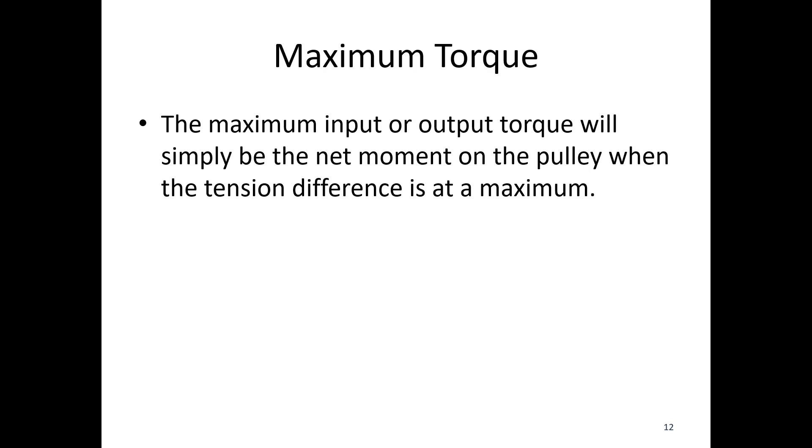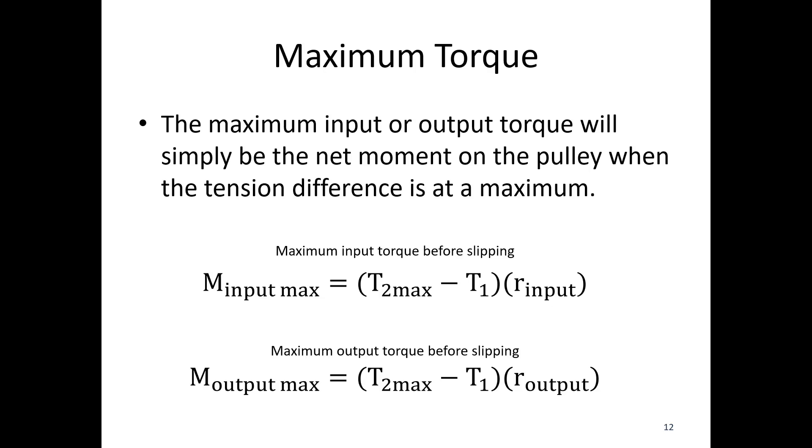The maximum input or output torque is simply the net moment on that pulley when the tension difference is at its maximum, when T2 equals T2 max. The tension difference, T2 max minus T1, over the radius of the input is our maximum input torque before slipping. On the output side, it's T2 max minus T1 times the output radius. If we have a different radius for the pulley on the output, it's the same calculation.